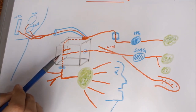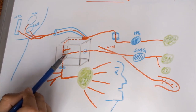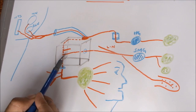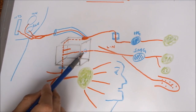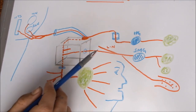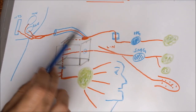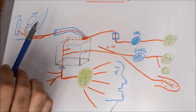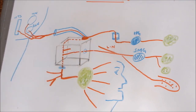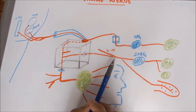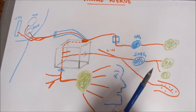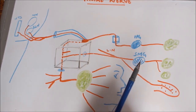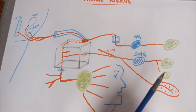Another nerve that the facial nerve gives in this segment is the chorda tympani branch. This branch runs in the middle ear cavity and exits through the petrotympanic fissure, then joins the lingual nerve, which is a branch of the mandibular nerve — in turn a branch of the trigeminal nerve. The chorda tympani fibers relay into the submandibular ganglion, and the postganglionic fibers supply the submandibular and sublingual salivary glands.